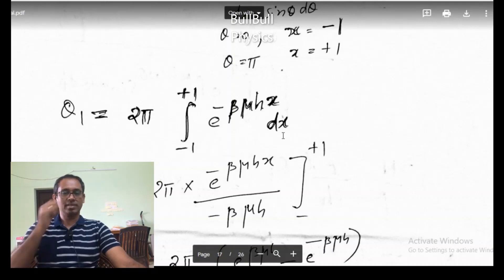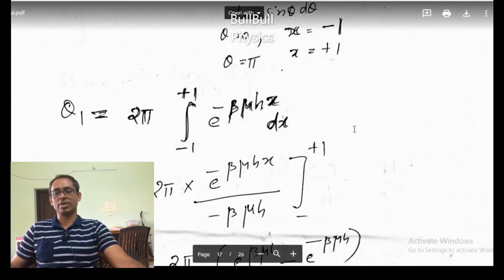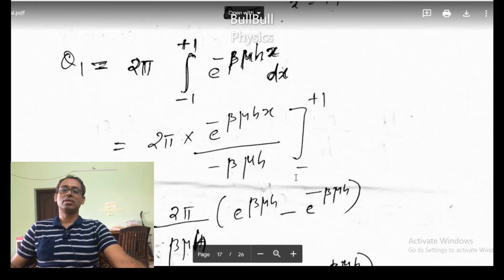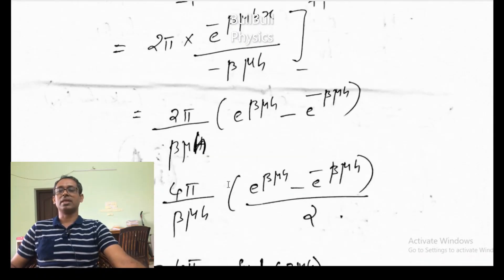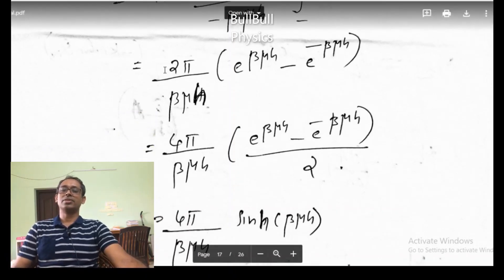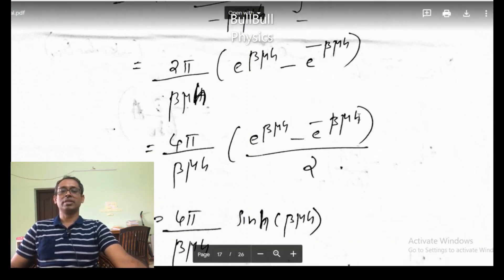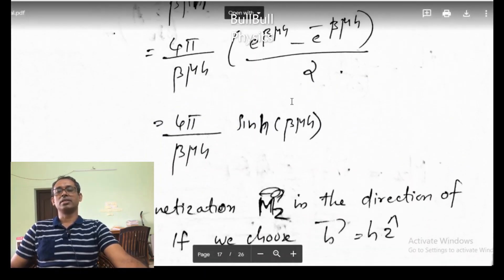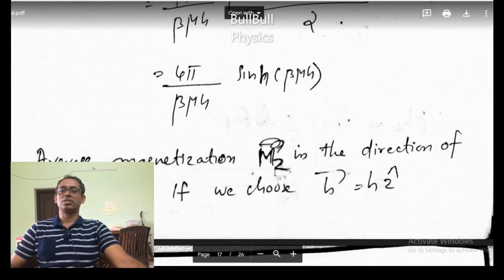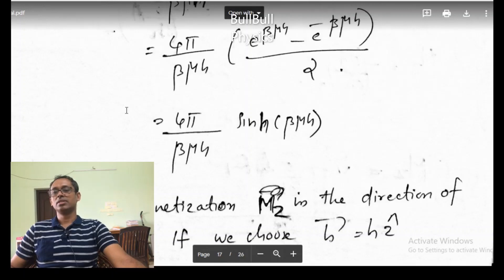As I apply the limits, I will get the expression with beta mu H terms. Introducing a factor of 2 makes this 4 pi, and this factor of 2 allows us to write the result as sinh (hyperbolic sine) of beta mu H. So this is the single-particle partition function: Q_1 = (4 pi / beta mu H) sinh(beta mu H).